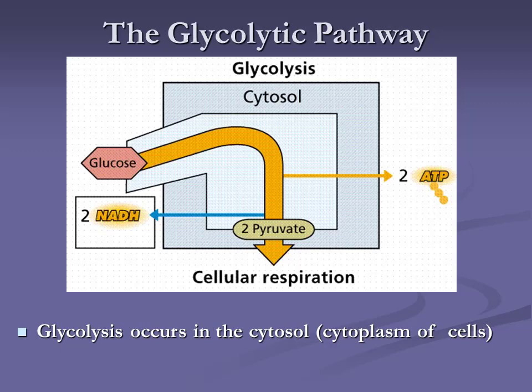The key to understanding glycolysis and the Krebs cycle is: follow the carbons. The word you need to associate with this description is the three-letter word NET — N-E-T — net production.